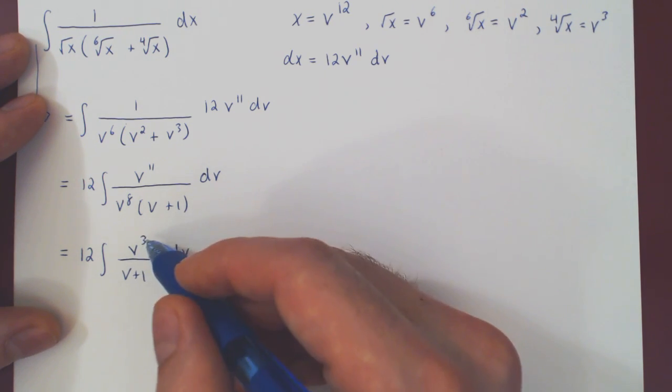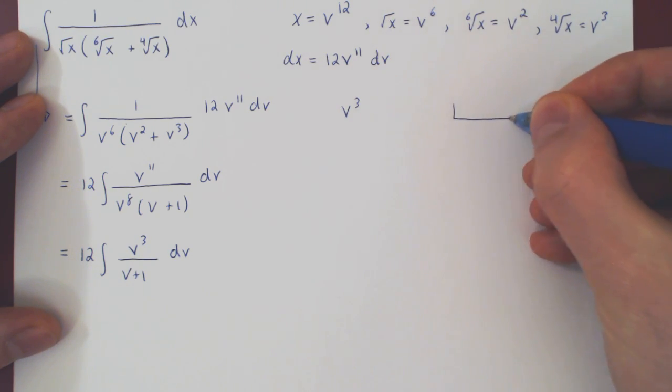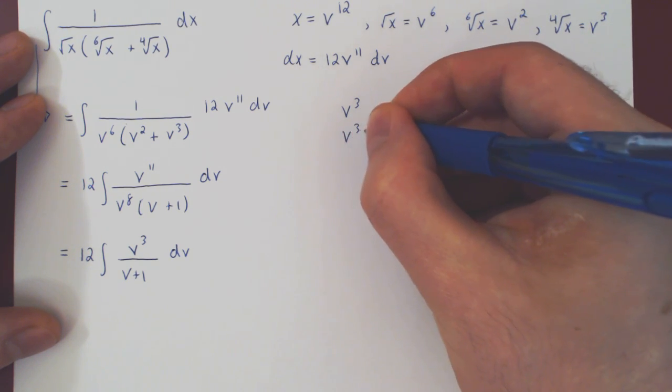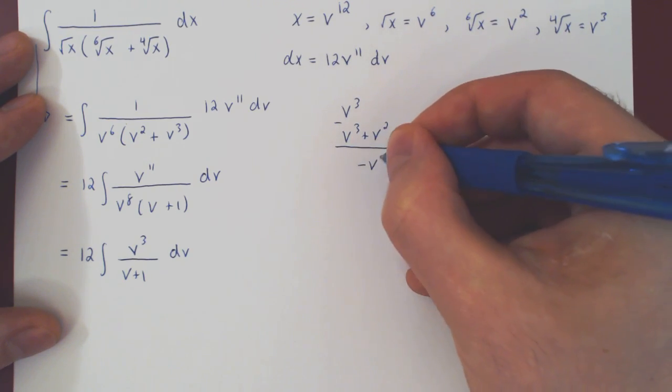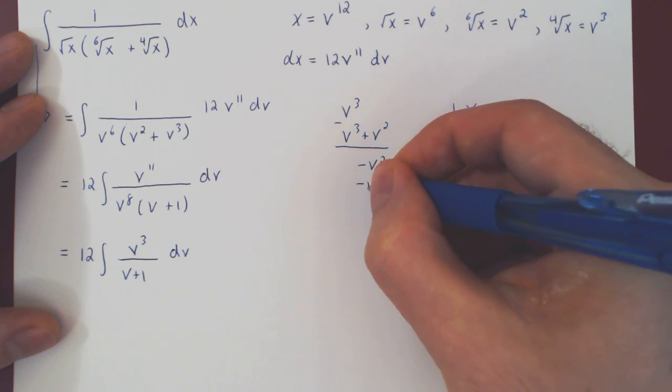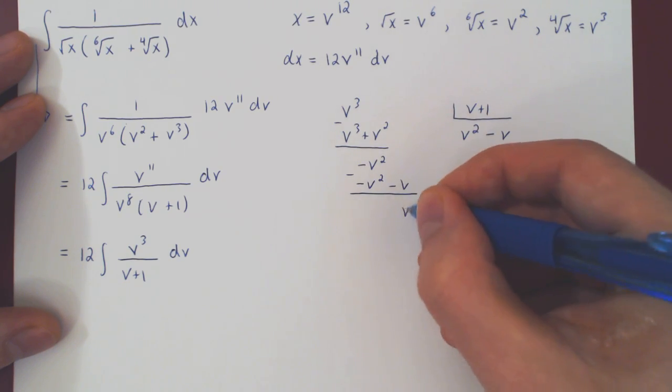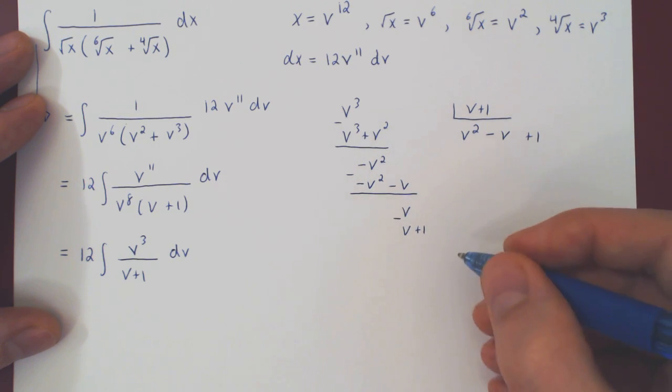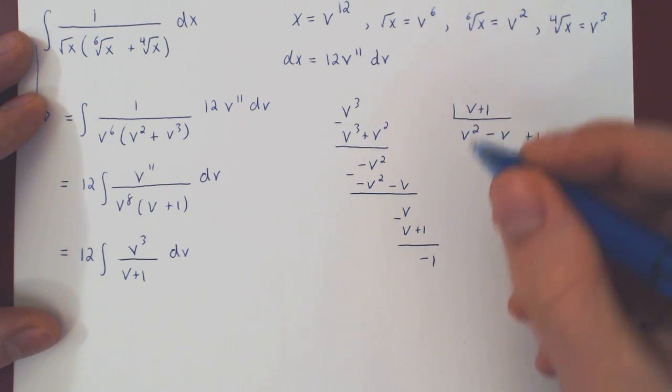So, let us divide v cubed by v plus one. Be careful. Again, negative negative v is positive v plus one. And then we have a constant remainder. Therefore, of degree zero, zero is less than one and this completes our long division.